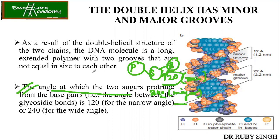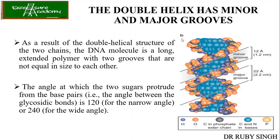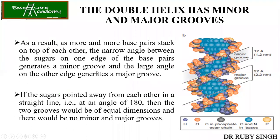Because of this angle difference, more and more base pairs stack on top of each other. The narrow angle between the sugars on one edge of the base pairs generates the minor groove, and the larger angle generates the major groove. So you have less space in the case of the minor groove and more space in the case of the major groove.